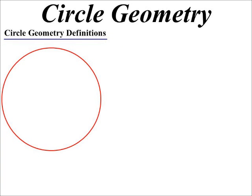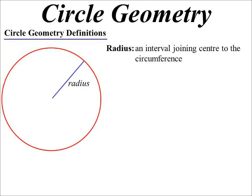That's a circle, the first term. A radius is simply an interval that joins the center to the circumference.